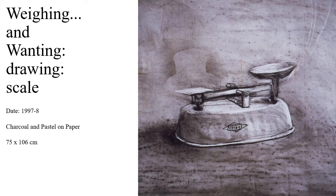This is Scale, done by Kentridge in 1997 through 1998. It is done with charcoal and pastel on paper and it is 75 by 106 centimeters. The first thing we notice with this piece is the use of toning throughout the image to give the piece an overall mid-tone and add a lot of drama. Most of the lines are very thin and defined — there are no hard bold outlines, which adds a little realism to the piece. Most of the piece is in a mid-tone, but there are highlights on the far right side of the scale and on the metal parts at the top of the scale.